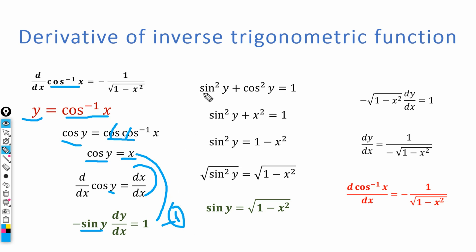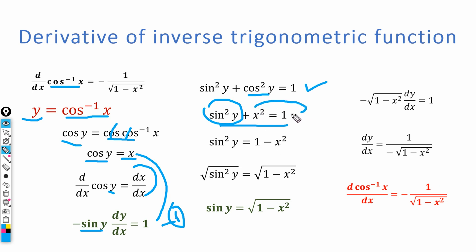Again using the trigonometric identity sine squared y plus cos squared y is equal to 1, and this time we replace cos y with x, since we know cos y is equal to x. We have sine squared y plus x squared is equal to 1. Solving for sine squared y gives sine squared y is equal to 1 minus x squared. Taking the square root on both sides, sine y is equal to the square root of 1 minus x squared.